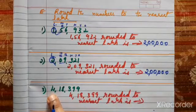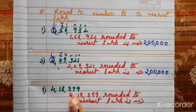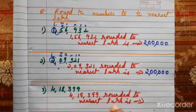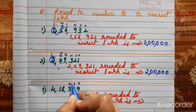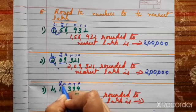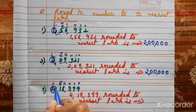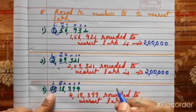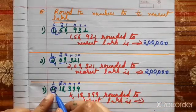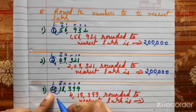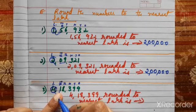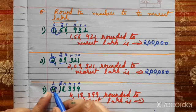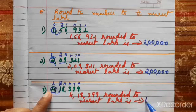Now 3rd question: 4,18,399 we have to round off. 4,18,399 rounded to nearest lakhs. First step, check the place value: ones, tens, hundreds, thousands, ten-thousands, lakhs. 4 is in the lakhs place. The rule is the same — knock the door and ask for help. The neighbor is 1, which is less than 5, so he can't help. This number remains the same — 4 as it is.